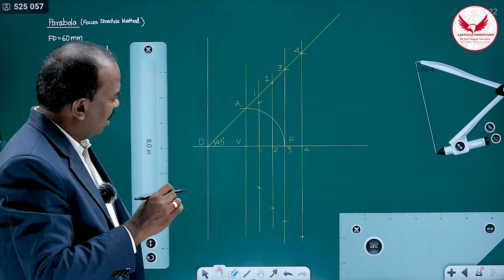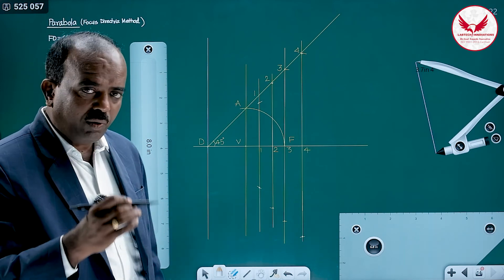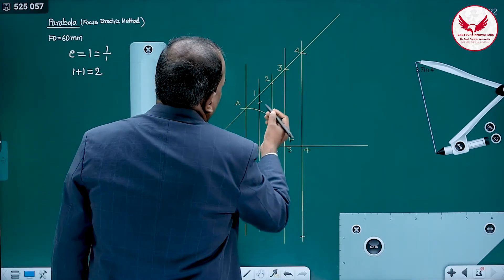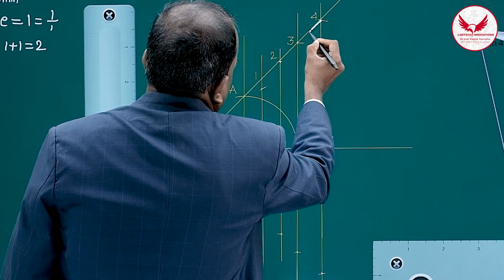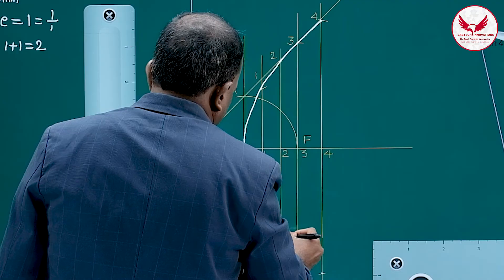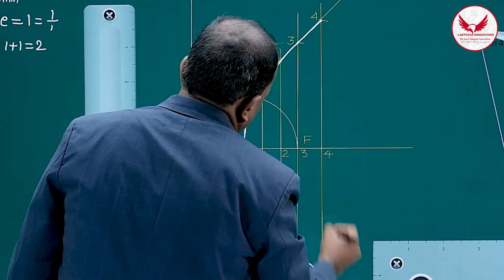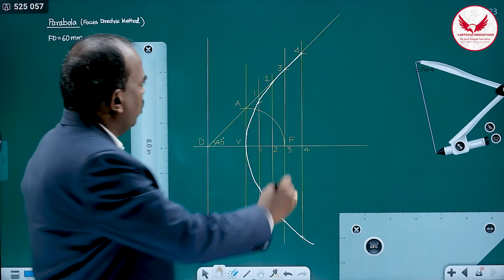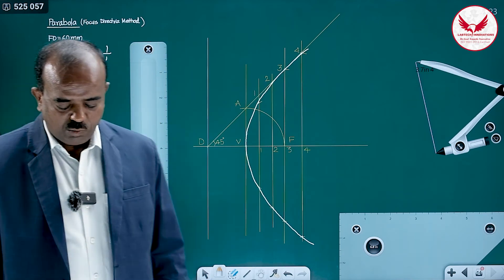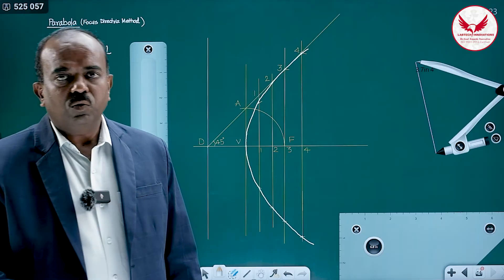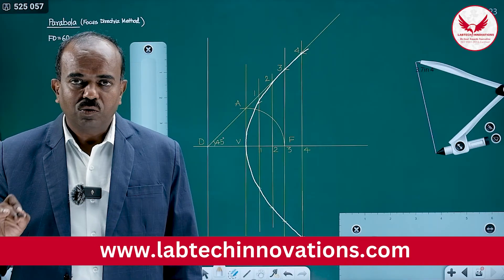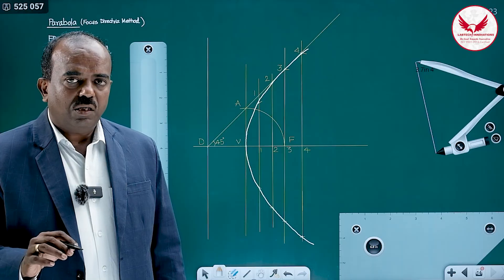Now see how I am drawing the parabolic curve. With a free hand, if you draw, it will be much better. The French curve will take more time. Instead of that, curve passing through these 8 points. This is the parabola passing through these 8 points. Smooth curve we can draw. While drawing, you have to see towards the points, not towards the pencil. And with concentration, move your hand, automatically it will pass through all these points. This is the proper way of drawing the parabola, parabolic curve.